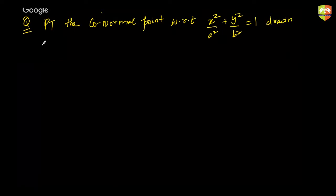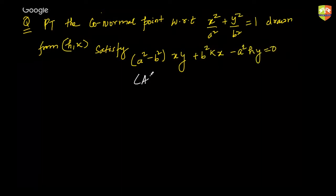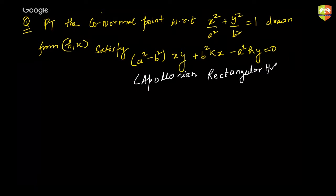drawn from the point h comma k satisfy the equation: a²(minus)b² · xy + b²k·x − a²h·y = 0, which is also called the Apollonian rectangular hyperbola.